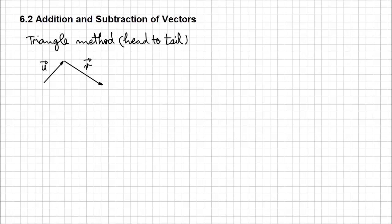This triangle method is a very easy way to see that the resultant of these two vectors, so if I want to find the vector that represents u plus v, it's going to be the vector that goes from the start point of u to the end point of v. And that's our resultant. That's how we call this vector, a resultant.